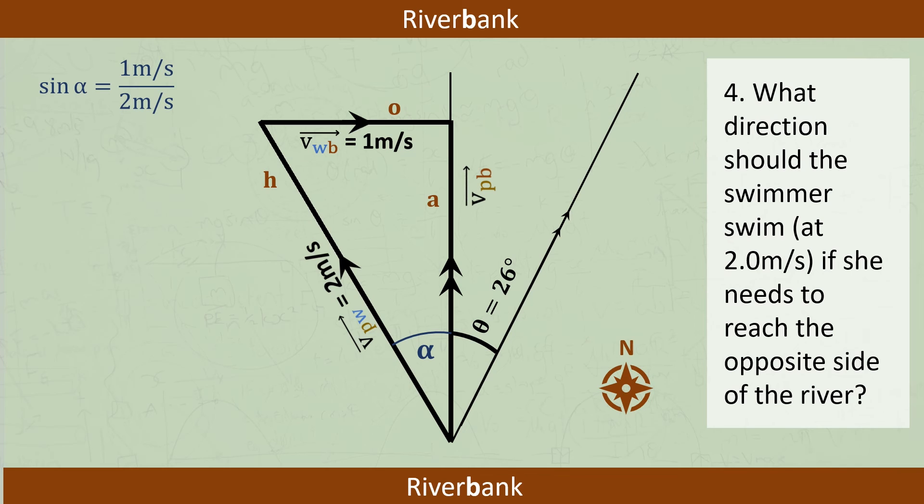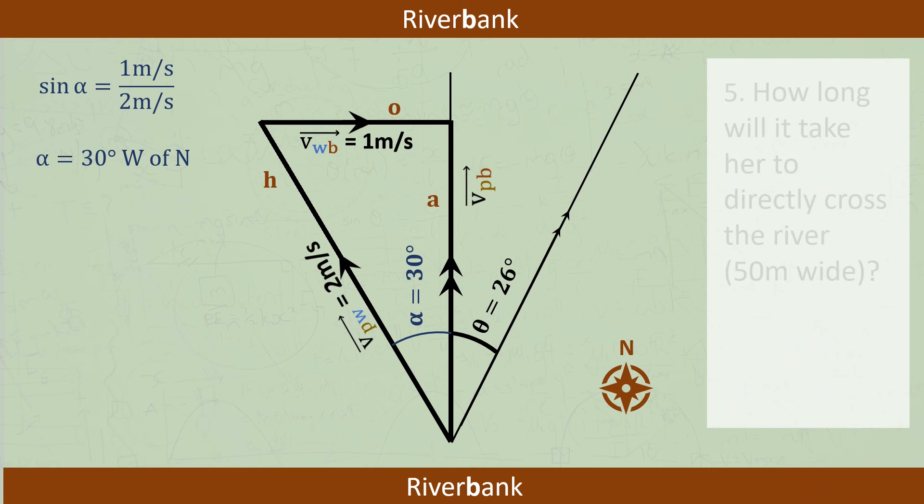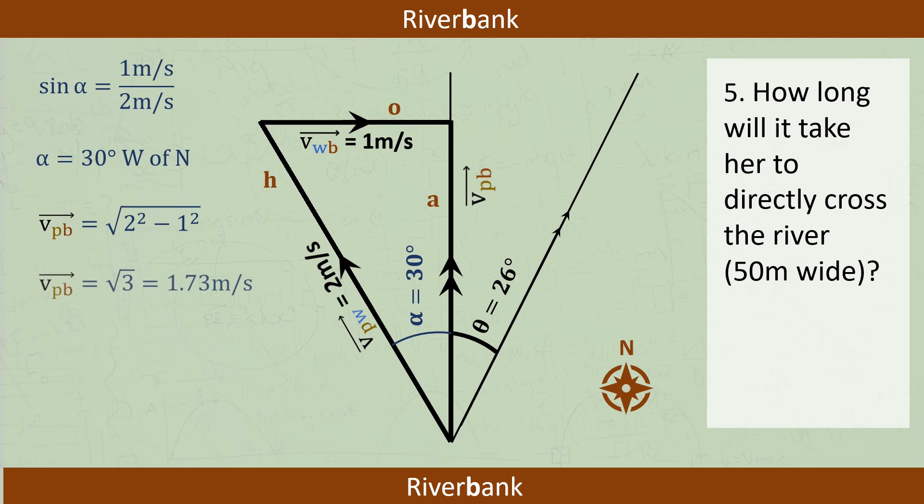If you're watching this, hopefully you know that sine of 30 degrees is a half. The last part of the question asks how long it will take her to swim directly across the river, so first we'll need to calculate how fast she swims across relative to the bank. Let's use Pythagoras again and we get 1.73 metres per second, and because the river is 50 metres wide we can just use velocity equals displacement over time to calculate that she'll take 28 seconds to cross the river.